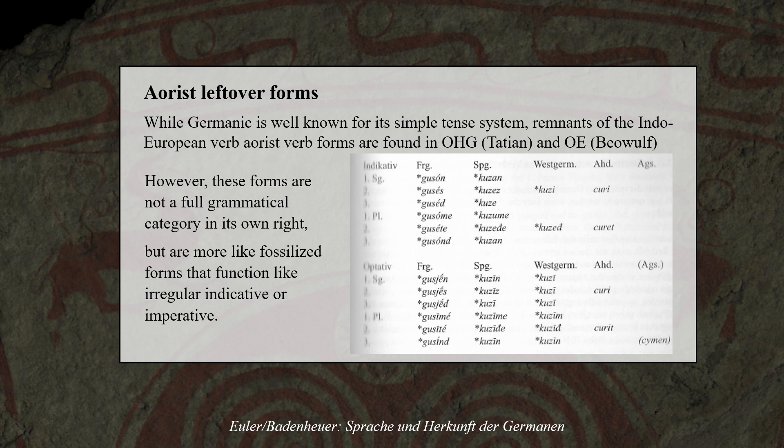According to German linguist Wolfram Euler, there are some remnants of the Indo-European aorist in Germanic. He points to some irregular forms in Old High German and Old English that seem to derive from the Indo-European aorist. However, these forms are not a full grammatical category in their own right, but are more like fossilized forms that function like irregular indicative or imperative forms. But they still point to the aorist still being around in the early development of Germanic and leaving traces in the daughter languages.